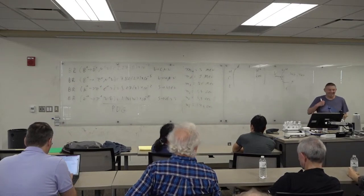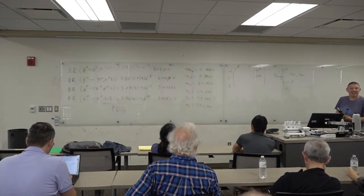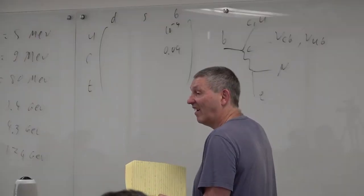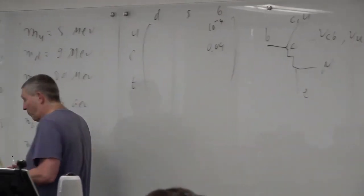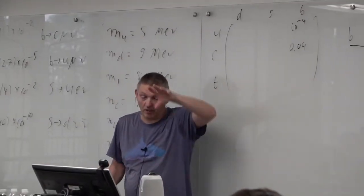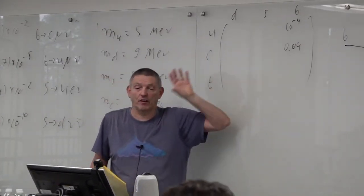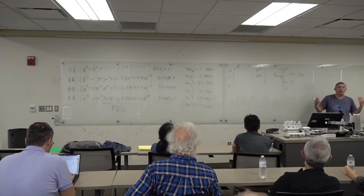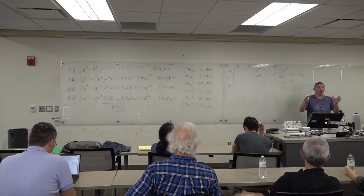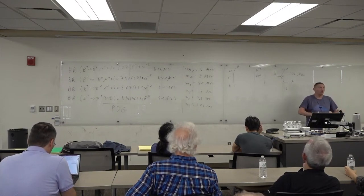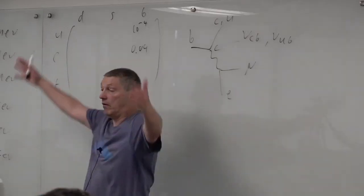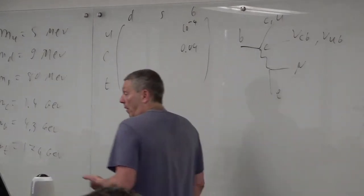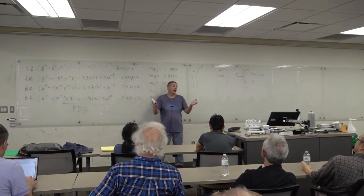A student asks: we call it a matrix but it's not a symmetric matrix — the row and column entries are different. The CKM matrix is a unitary matrix, not a Hermitian matrix. When we have a Hermitian matrix, our intuition says they are the same. A unitary matrix is really a basis change. In normal quantum mechanics, when you have two bases that don't commute, you put a unitary matrix that moves you between one basis and the other.